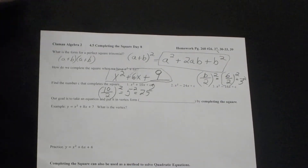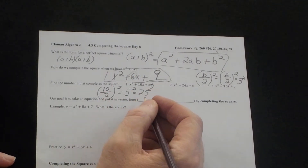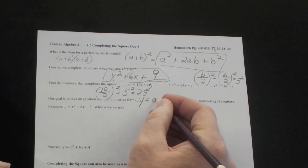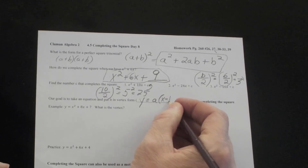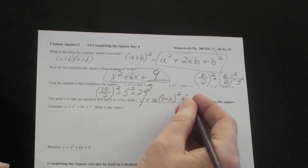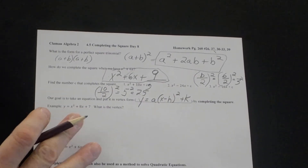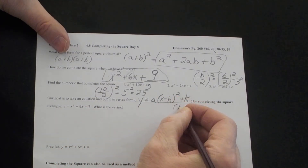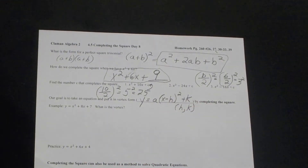Our goal is to take an equation and put it in vertex form. For a quadratic equation, if you were graphing a parabola, the vertex form is a times (x minus h) squared plus k. The vertex is at (h, k) — h is the x-coordinate of the vertex and k is the y-coordinate of the vertex.